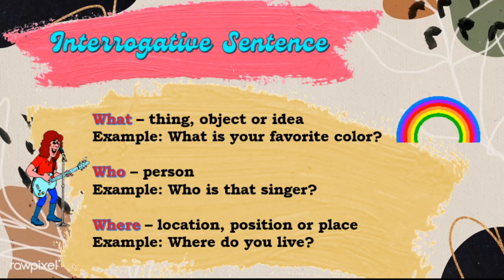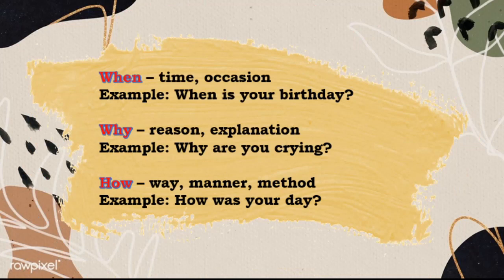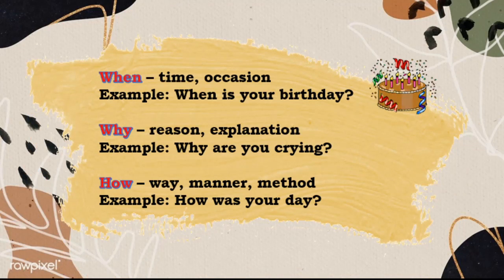The word 'where' is used in asking for a location, position, or place — for example, where do you live? The word 'when' is used when asking for a time or occasion — for example, when is your birthday? The word 'why' is used in asking for a reason or explanation — for example, why are you crying? The word 'how' is used when asking for a way, manner, or method — for example, how was your day?